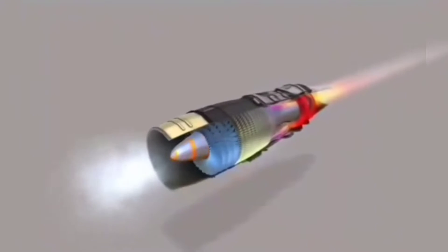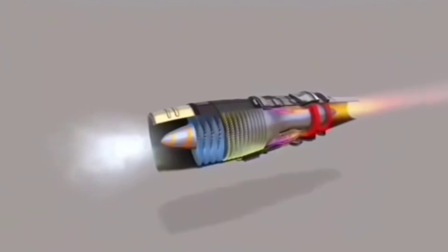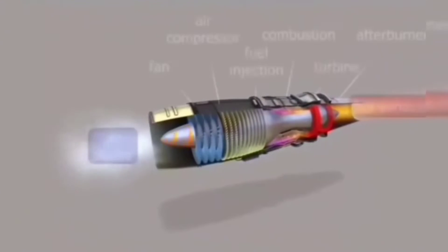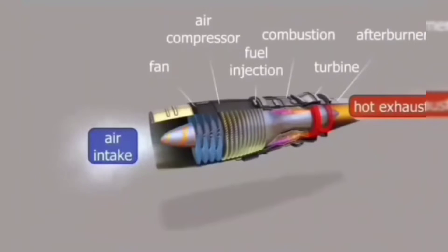The basic principle of turbojet engines is the thrust generated by a high-speed jet of gas. The air enters the rotating compressors through the air inlet. The blades of the compressor increase its speed and compress the air.